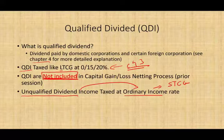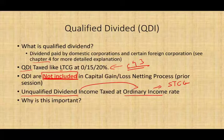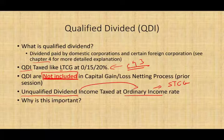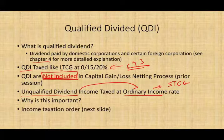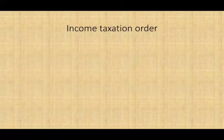Why is this important? Why are we talking about this? Because in taxation, we have to know how to tax income — different income is taxed differently. Ordinary income is taxed differently than long-term capital gain, and within long-term capital gain we could have 28% and 25% rates. So we want to make sure we understand how to tax our income. Income taxation order is very important.